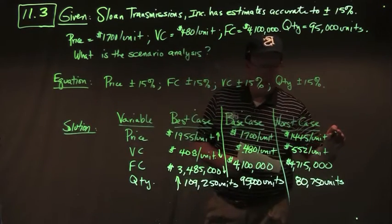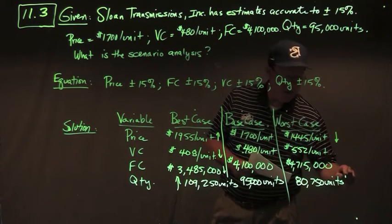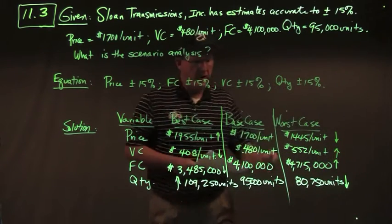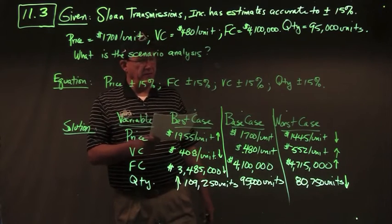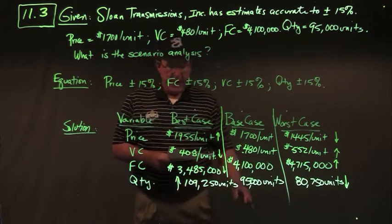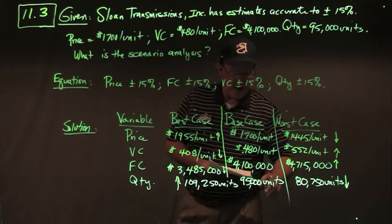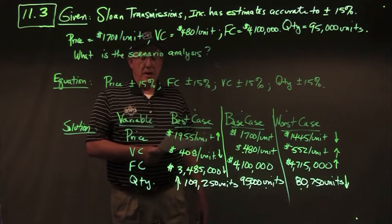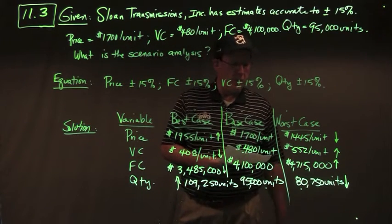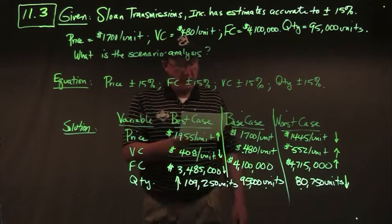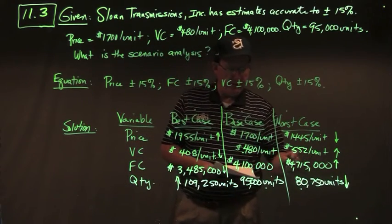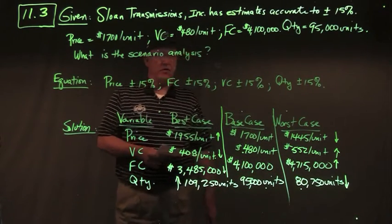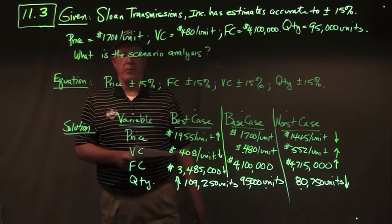In the worst case, price and quantity go down and costs go up. Price: $1,700 times 0.85 equals $1,445 per unit. Quantity: 95,000 times 0.85 equals 80,750 units. Variable cost: $480 times 1.15 equals $552 per unit. Fixed cost: $4.1 million times 1.15 equals $4,715,000. There are your answers to problem 11.3.